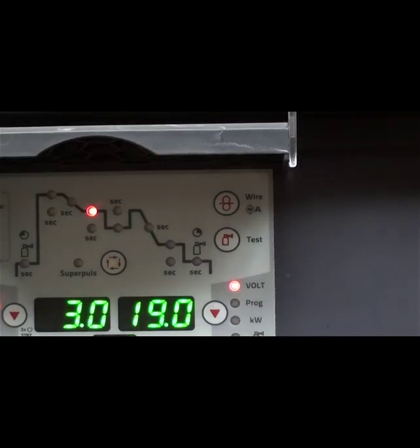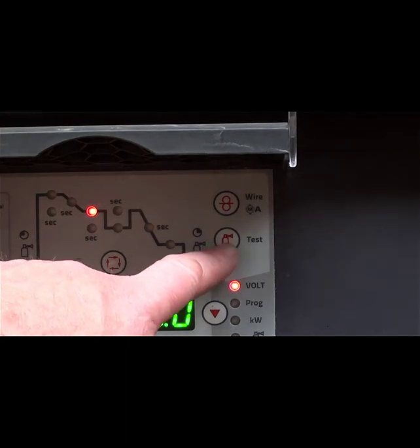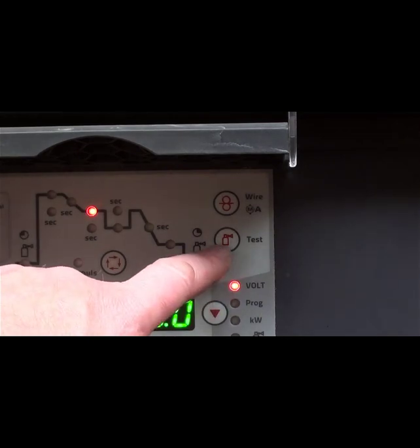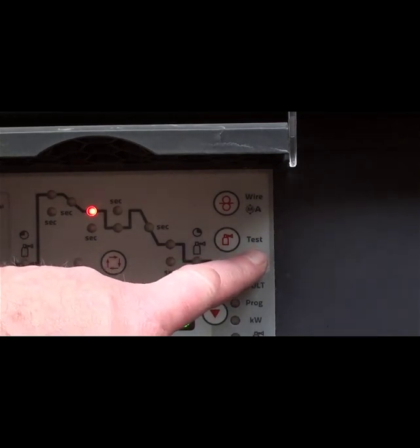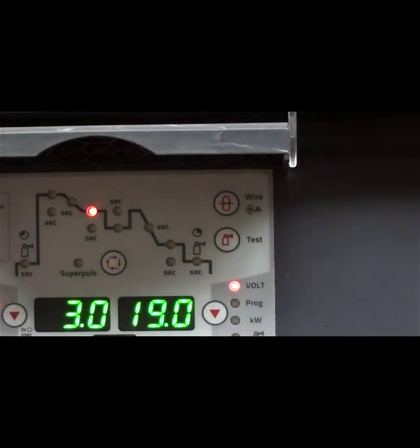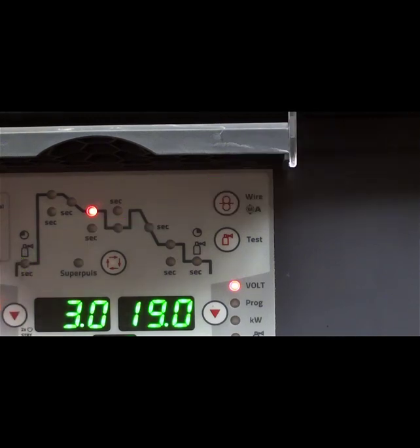In order to check the gas flow, you need to push this button up the top right hand corner of the panel. It's got a little aerosol can with a cone on it for blowing gas. That's the test button for the gas. So you're going to push that button and that will have the gas flowing through the torch. You can see the light on this side here. So the gas is actually going to flow for a few seconds while you actually set it up on the torch.